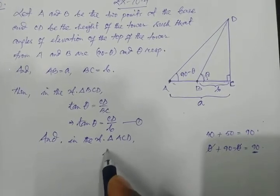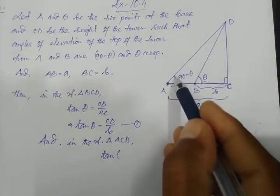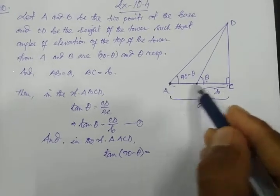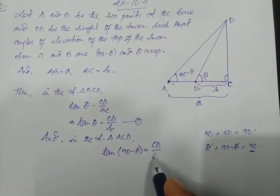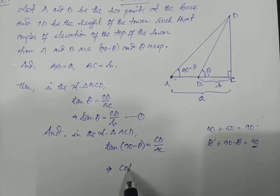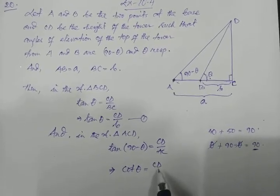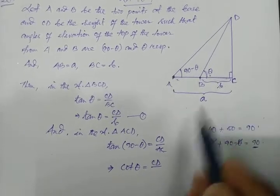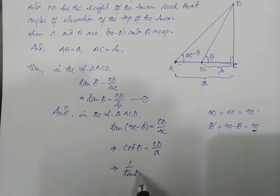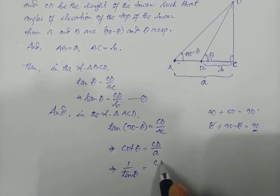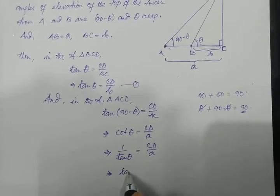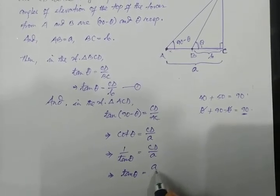In right triangle ACD, the angle is 90 minus theta. So tan(90 minus theta) equals CD divided by AC. Since tan(90 minus theta) equals cot theta, we get cot theta equals CD divided by a. Since cot is the reciprocal of tan, we can write this as 1 over tan theta equals CD over a, and inverting both sides gives tan theta equals a divided by CD.